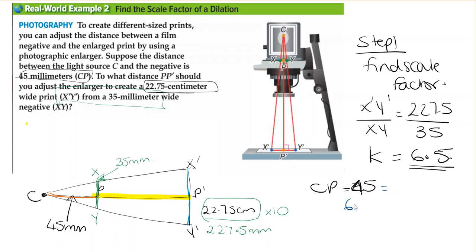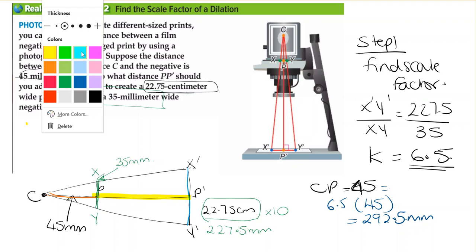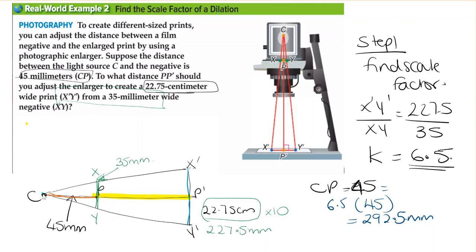What we need to do is multiply: 6.5 multiplied by 45. This will give us 292.5 millimeters. This distance we just found is the distance from C to P'.